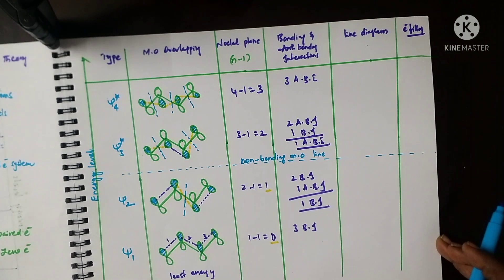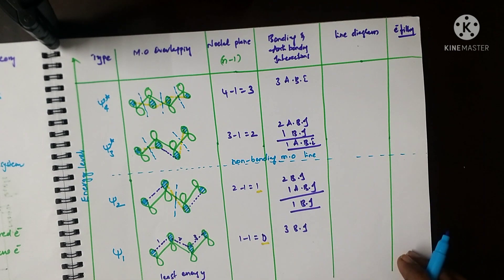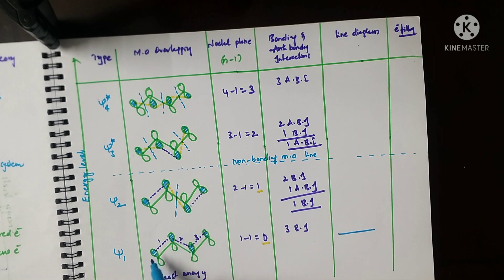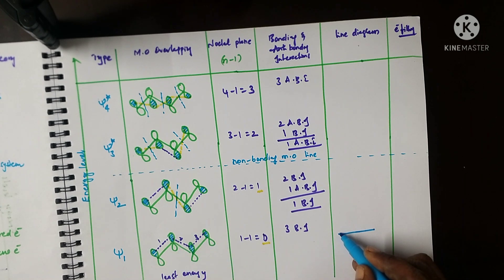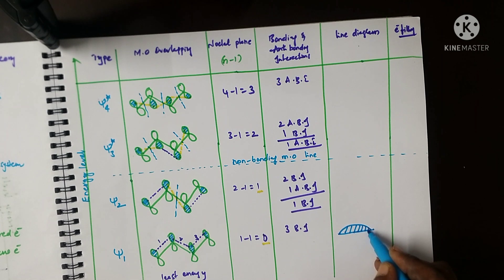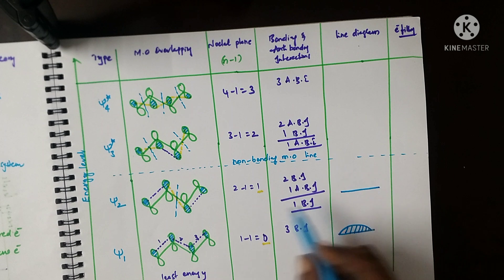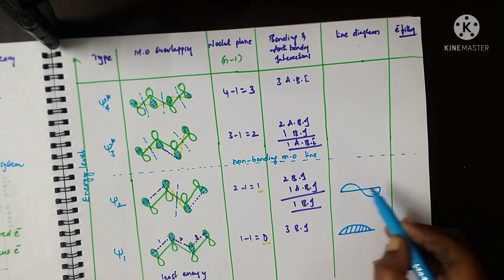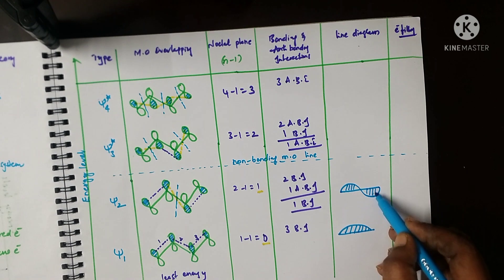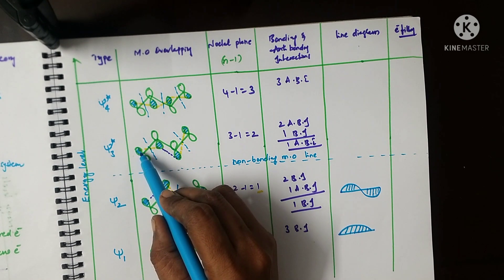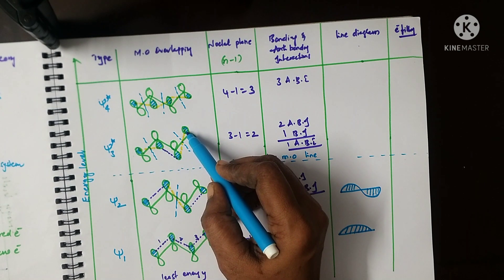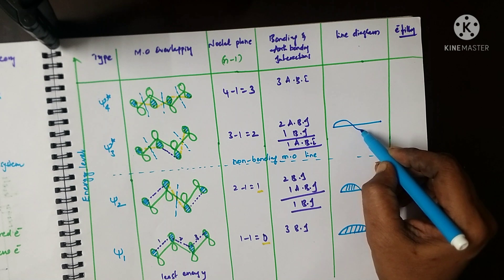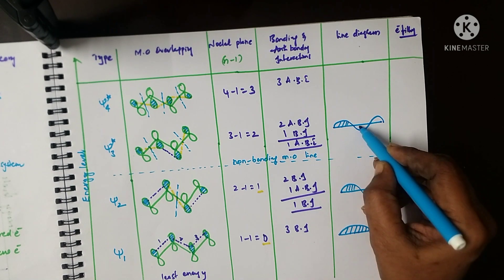Now let's check the line diagrams for psi 1 through psi 4 star. In psi 1, overlapping takes place only in the upward direction — all lobes point up. In psi 2, two lobes are in the upward direction and the remaining two are in the downward direction. In psi 3 star, the pattern is: one upward, two downward, and the fourth upward — represented as up, down, down, up.